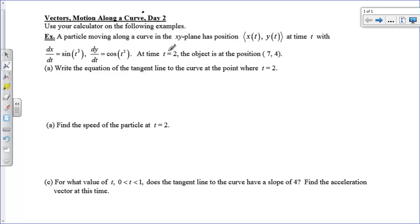So I've got a particle moving along a curve in the x, y plane, and we've got a parametric set of equations here. At time t equals 2, we have a position where x is 7 and y is 4. We're supposed to write the equation of the tangent line to the curve at the point where t equals 2. So we're going to use y minus y1 equals m times x minus x1 to write this equation. We already have our x and y at t equals 2. The last thing we need is our slope or our derivative at t equals 2.